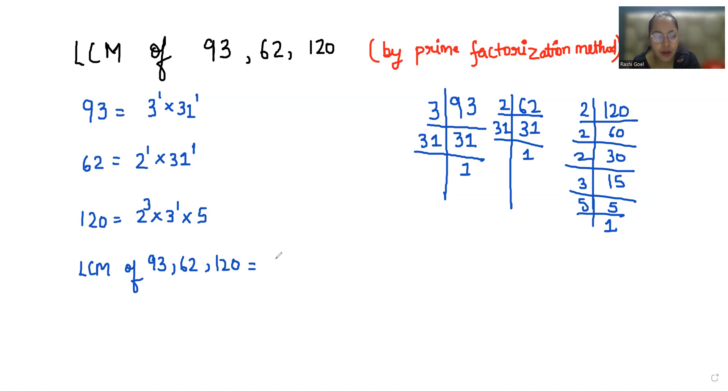So prime numbers are 2, 3, 5 and 31. Now write their highest power. 2 has 3, 3 has only 1, 5 is only 1 and 31 as well only 1.